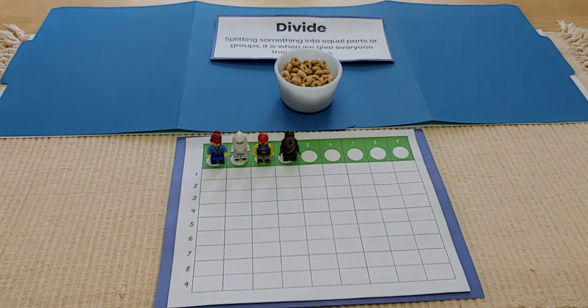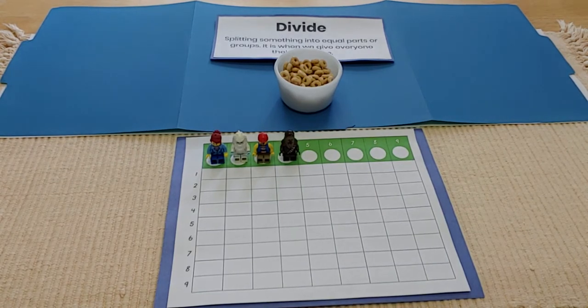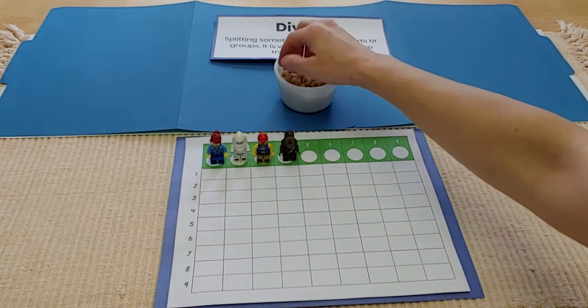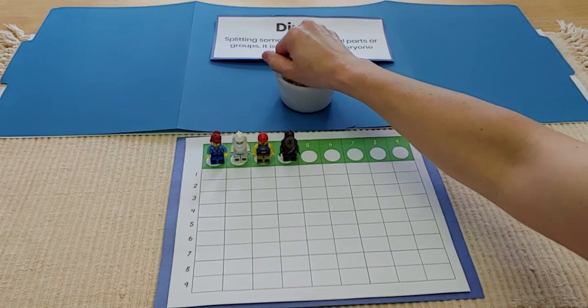I'm going to pretend that my friends came over to have a little snack. I have 20 Cheerios, so I'm going to count out 20 Cheerios.